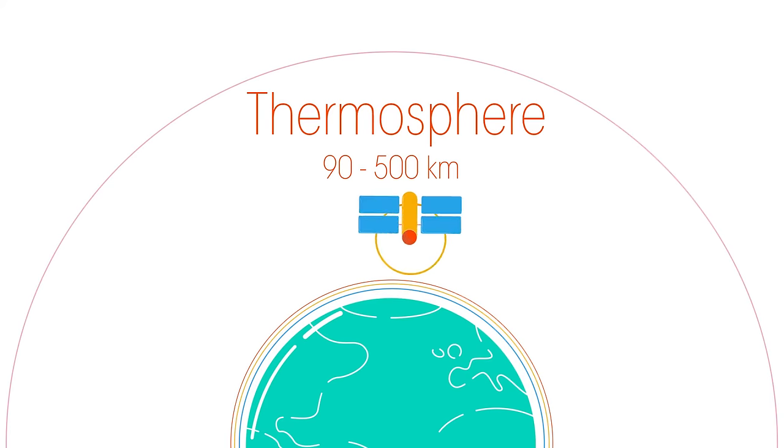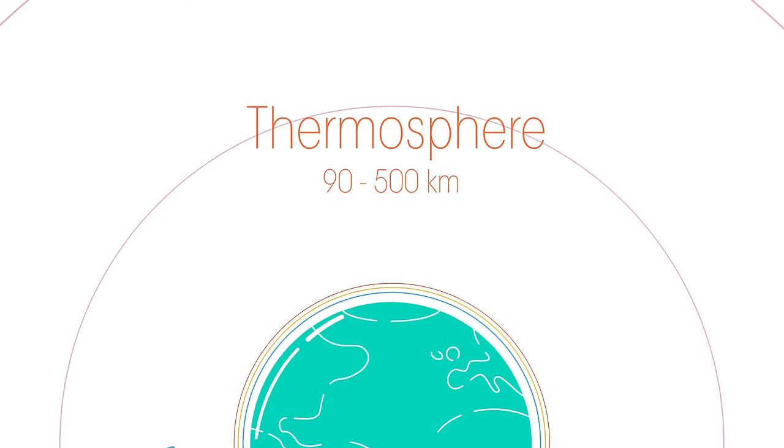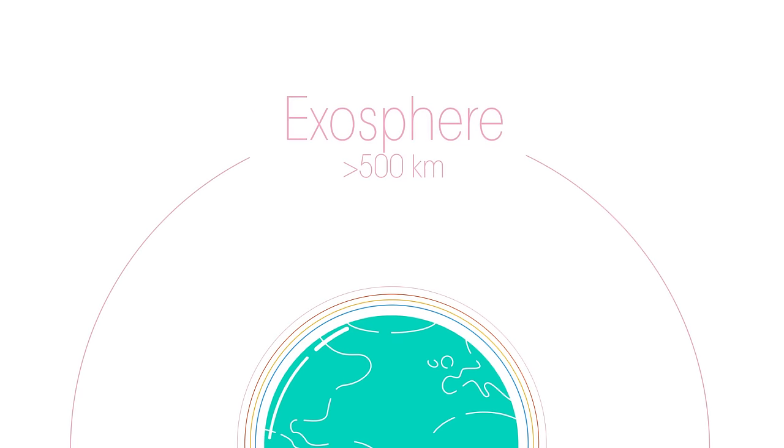Then, there's the thermosphere. The International Space Station orbits the Earth at 400 kilometres. And then, the exosphere is where our atmosphere merges into outer space.